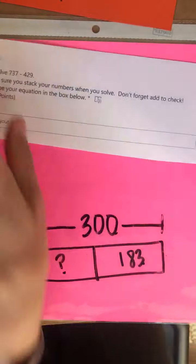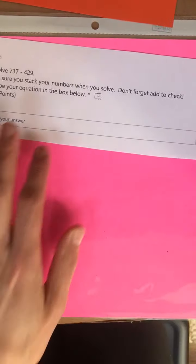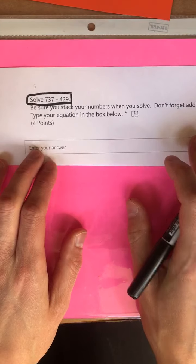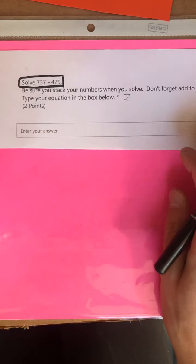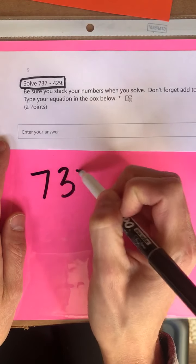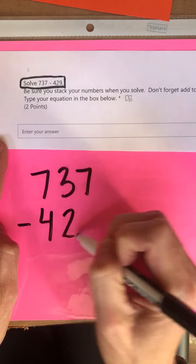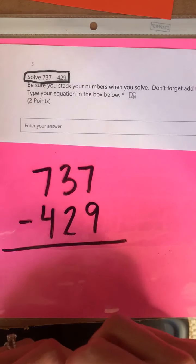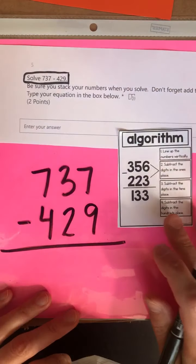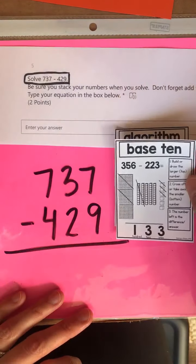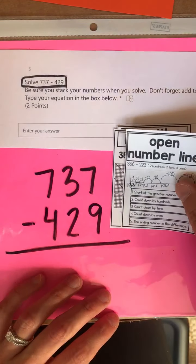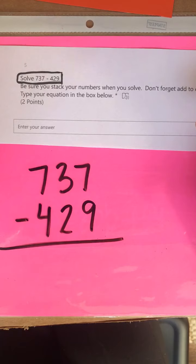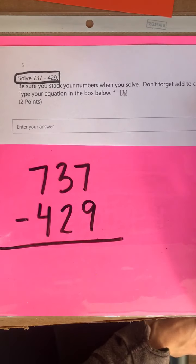Okay friends, great job. Let's take a look at number five together. Number five says solve 737 minus 429. Be sure to stack your numbers when you solve. So when Mr. Terry says stack your numbers, he just means set up 737 minus 429. You're going to go ahead and stack your numbers and solve. If you just solve it like this, that's the standard algorithm. Maybe it helps you to draw the place value model too, or maybe you want to use an open number line and then plug it into the standard algorithm. Pause your video, solve this problem, and press play when you're ready to move on.